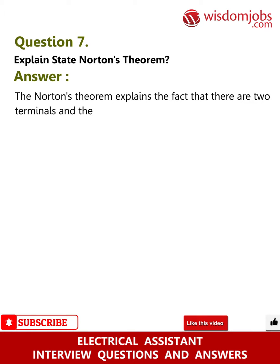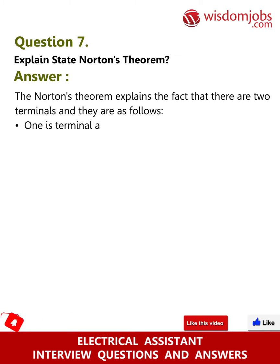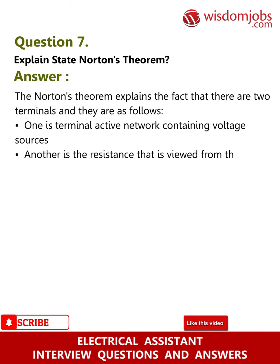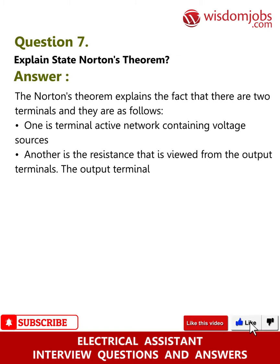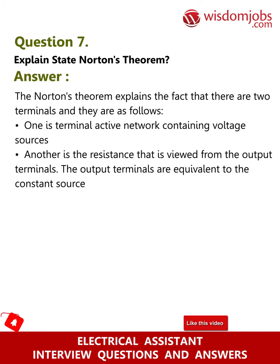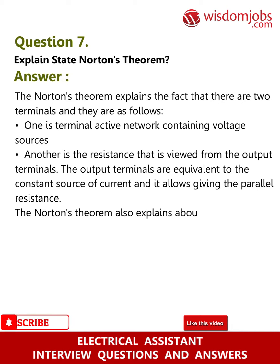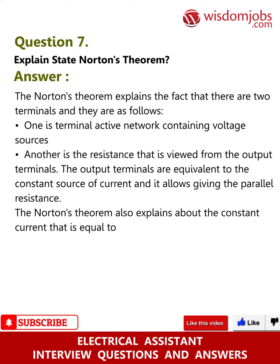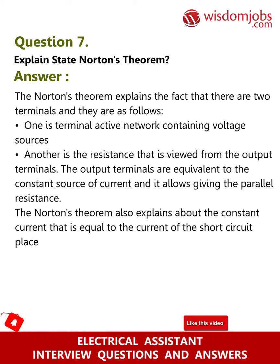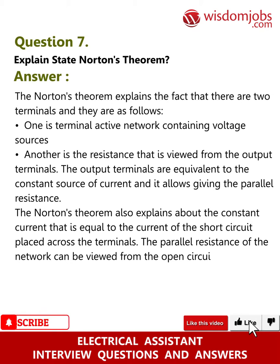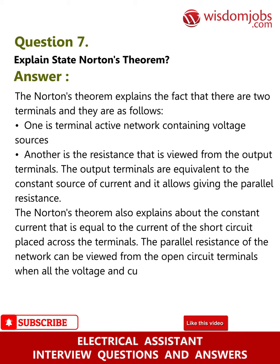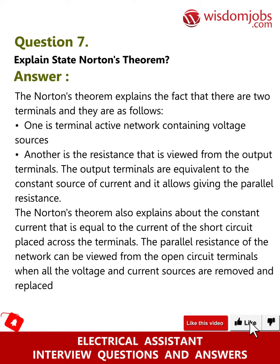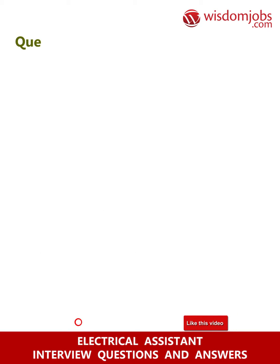Question 7: Explain Norton's theorem. Answer: Norton's theorem explains that there are two terminals as follows: one is a terminal active network containing voltage sources, and another is the resistance viewed from the output terminals. The output terminals are equivalent to a constant source of current allowing parallel resistance. Norton's theorem also explains the constant current equal to the short-circuit current placed across the terminals. The parallel resistance of the network can be viewed from the open circuit terminals when all voltage and current sources are removed and replaced by internal resistance.